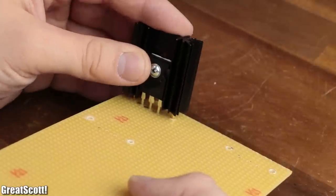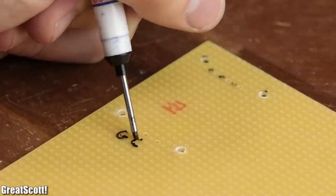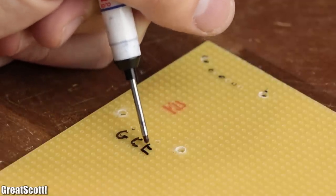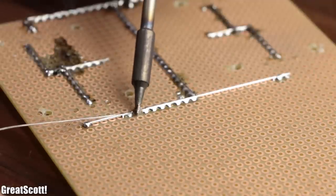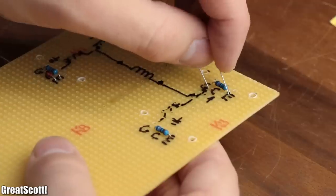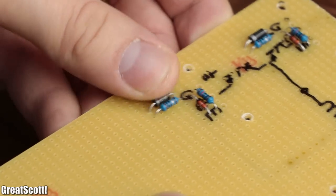Once I was certain that all IGBTs fit on the perfboard, I removed them again and labeled each pin according to the pinout of the IGBT. I did this because it saved me a bit of confusion while I continued by soldering the rest of the complementary power electronic components in place.